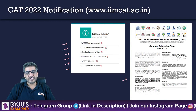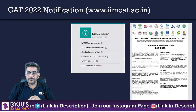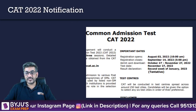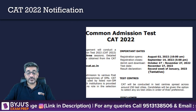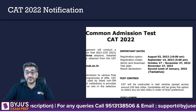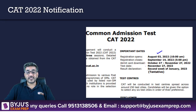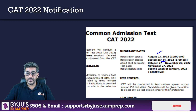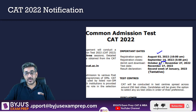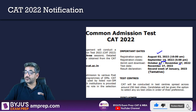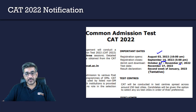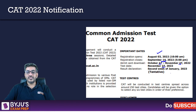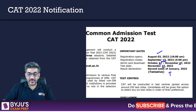A few important things: the key dates are — registration opens on August 3rd and goes on up to September 14th. The admit card can be downloaded from October 27th to November 27th. The exam is on November 27th, 2022, and the result will be out by the second week of January 2023.